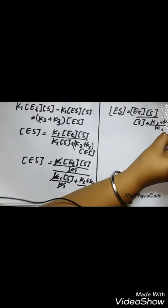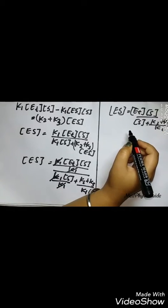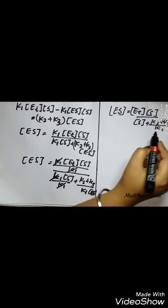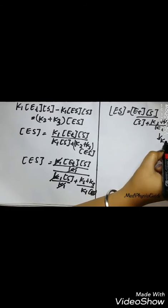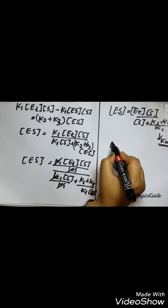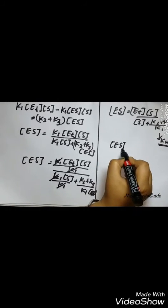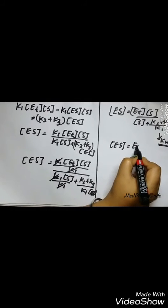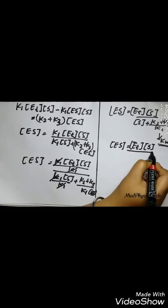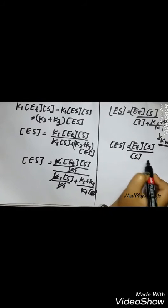Things would seem a lot familiar to you guys. The term K2 and K3 divided by K1 is actually defined as the Michaelis and Menten constant. Hence, replacing the term with Km, we get ES is equal to ET into substrate divided by concentration of substrate plus Km.